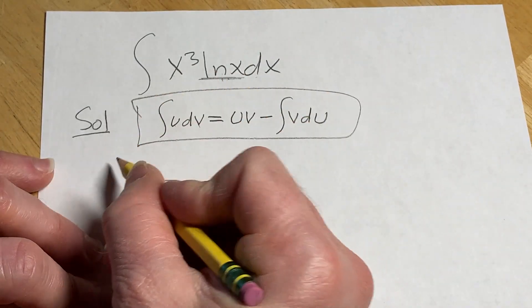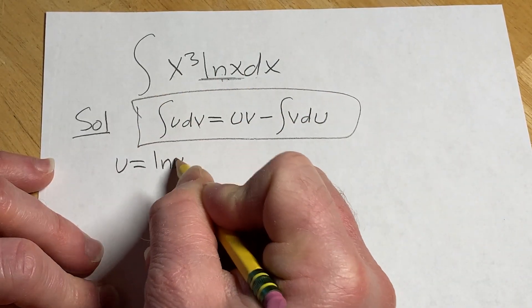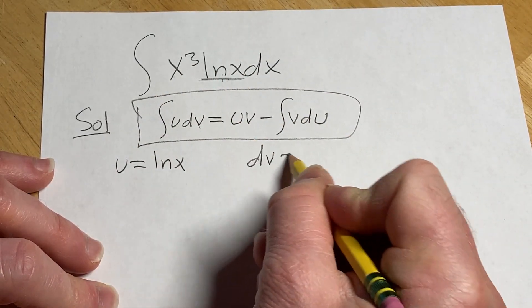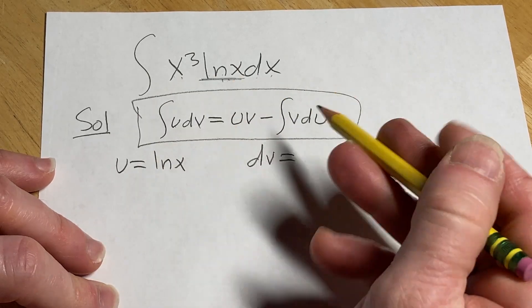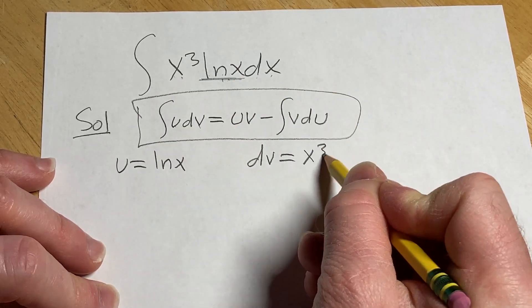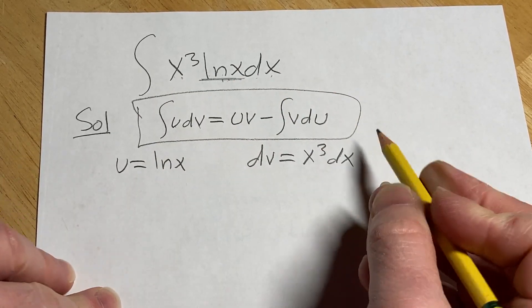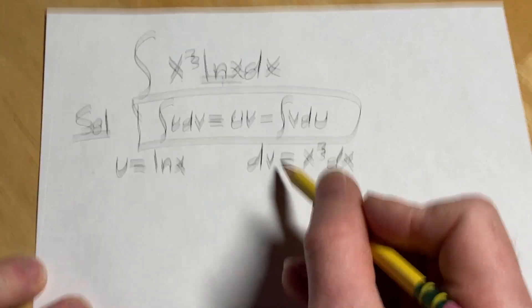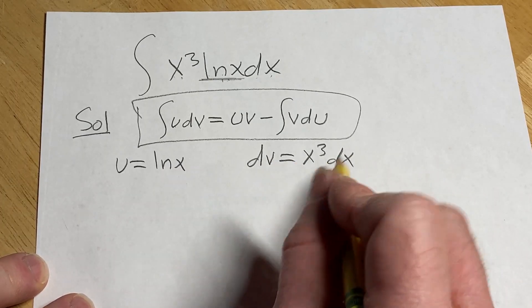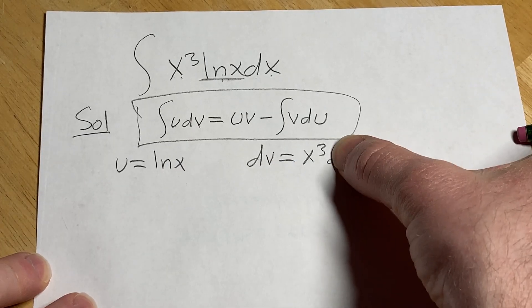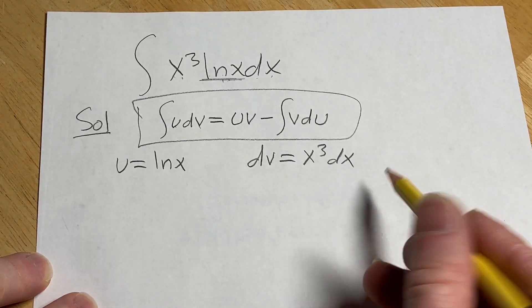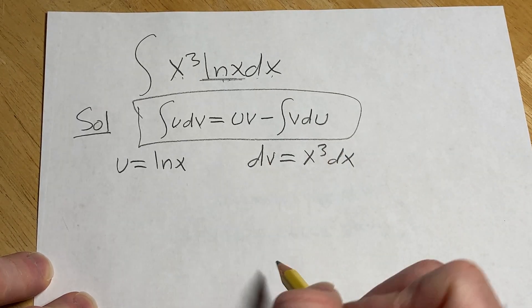So let's go with u equals lnx and then dv is going to be what's left over so x cubed and dx. Always remember that when you're picking your dv it always includes the dx. So the dv always goes with the dx. Really important, a common mistake is people will forget to write the dx. So don't forget the dx always goes with the dv.